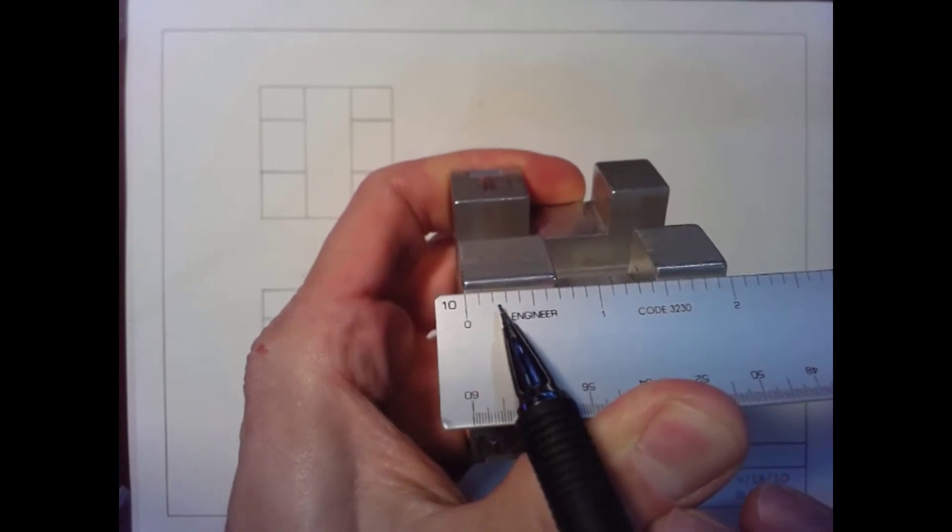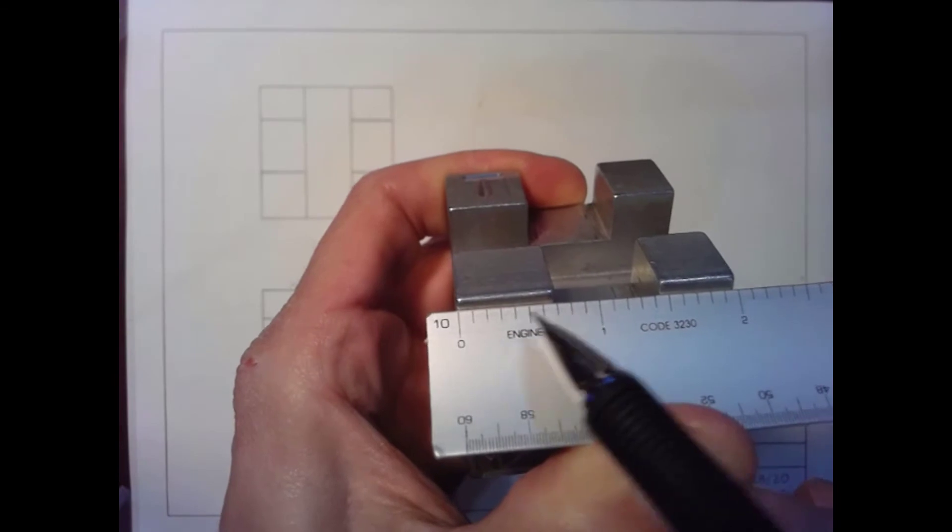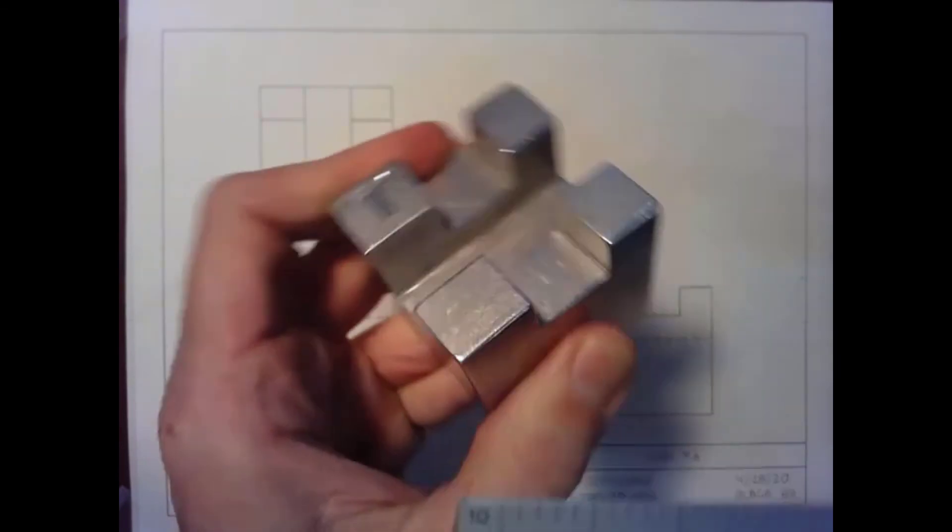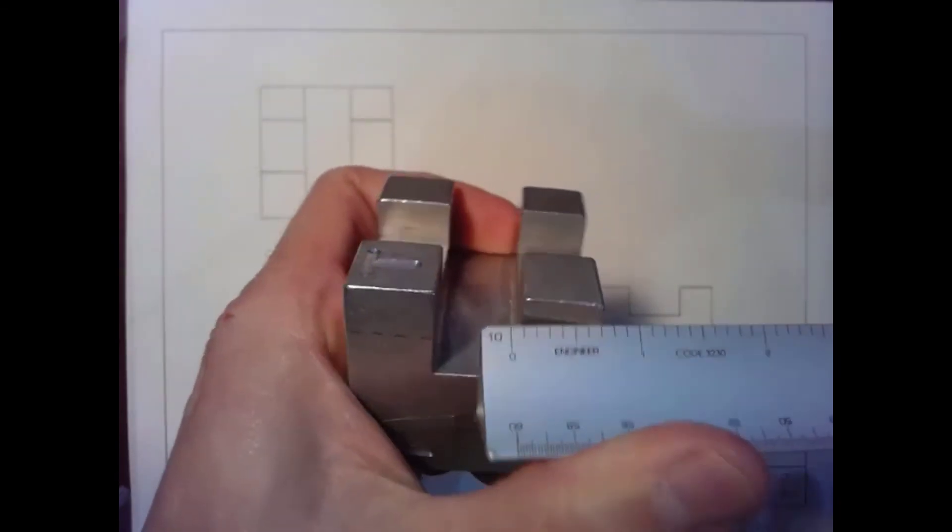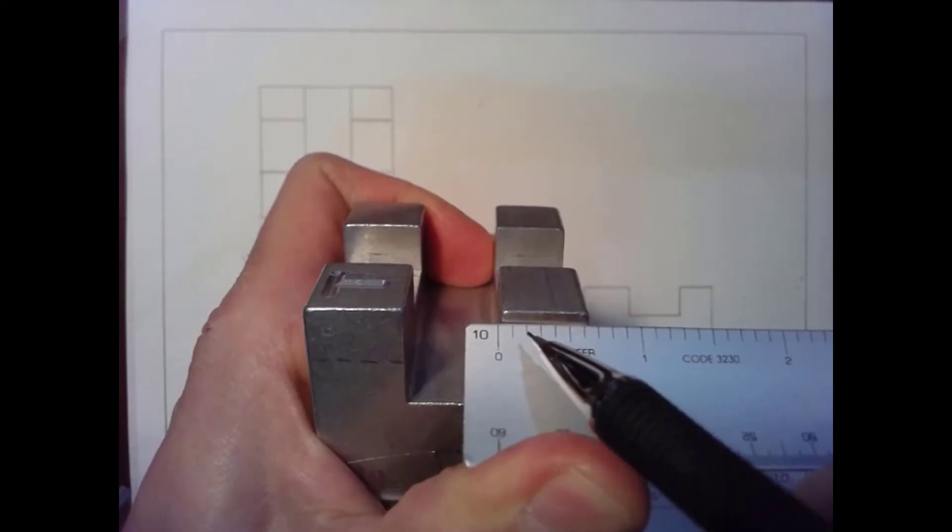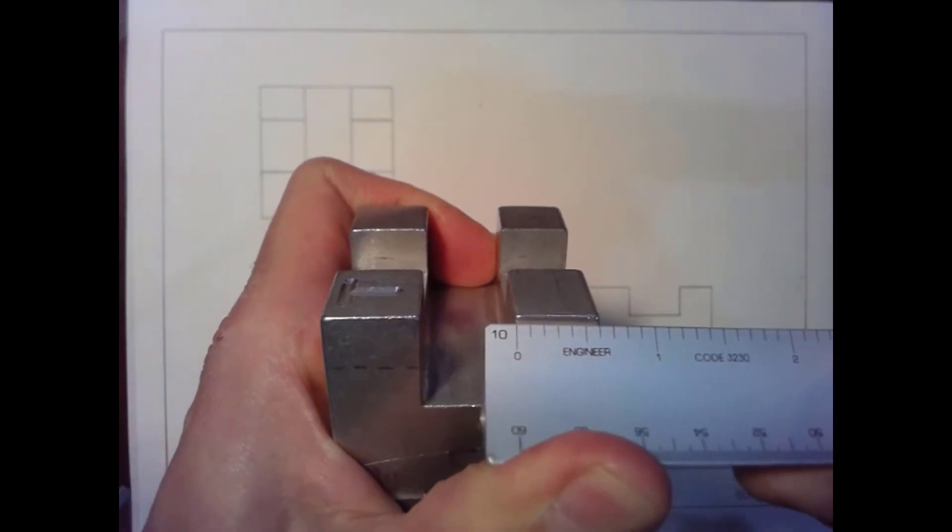So one, two, three, four, five, six, seven tenths of an inch. One, two, three, four, five, six tenths.